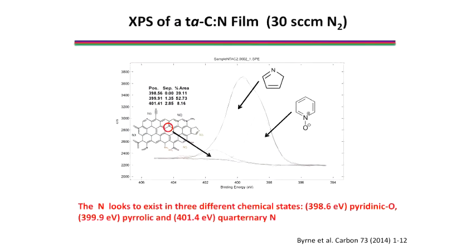The Young's modulus drops, so about 300 gigapascals. This still is in the regime of a diamond-like carbon, but on the lower end. This is much more like a carbon nitride film than a tetrahedral amorphous carbon film, but it's still to be determined.